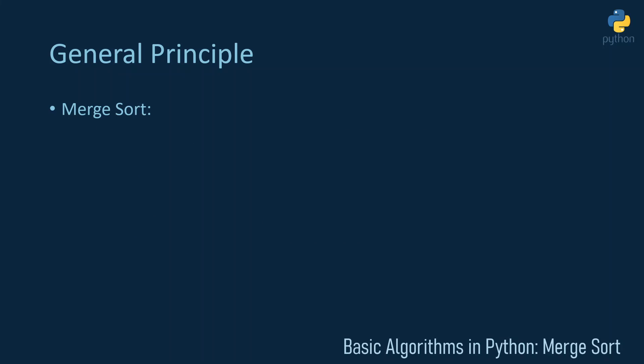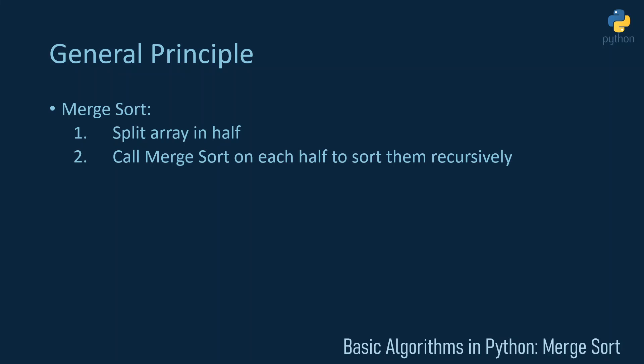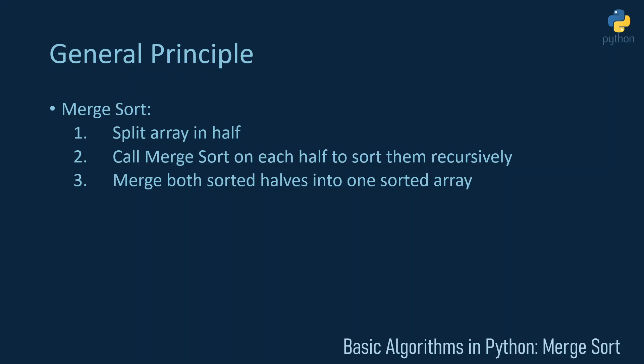To sort an array using merge sort, the general principle is to split the array in half, then call merge sort on each half to sort those halves recursively, and as a third step merge both sorted halves into one sorted array. Merge sort divides the problem of sorting a whole array into sorting two arrays of half the size, and this continues until we have arrays of size one.